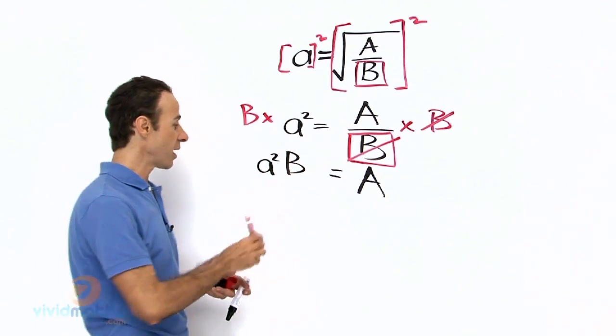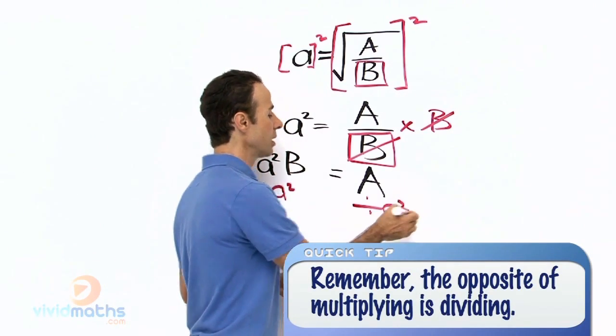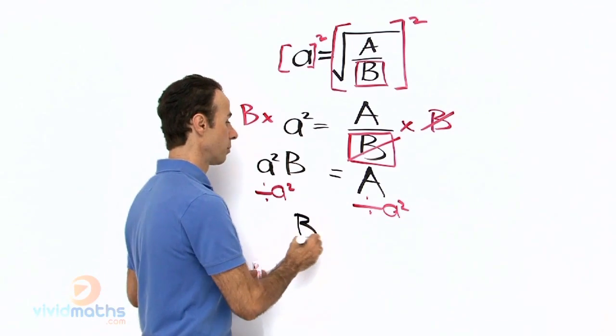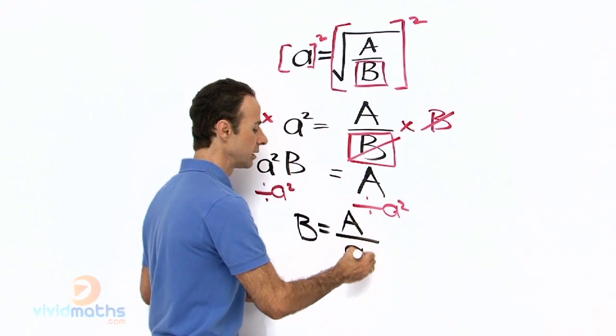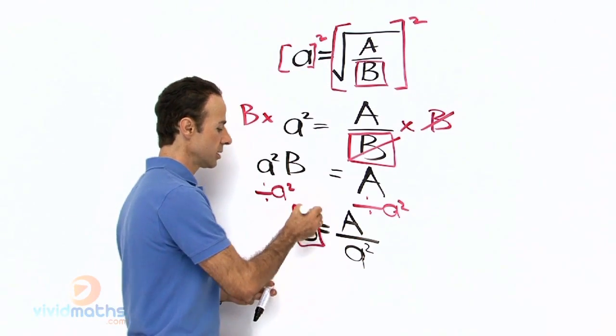Divide by a squared. So quite simply, to leave the b by itself, b equals capital A all over little a all squared. That is your subject.